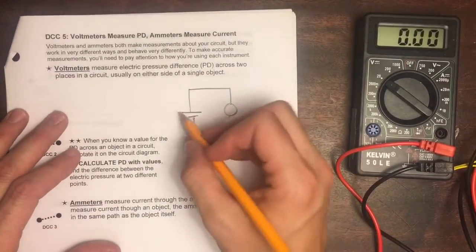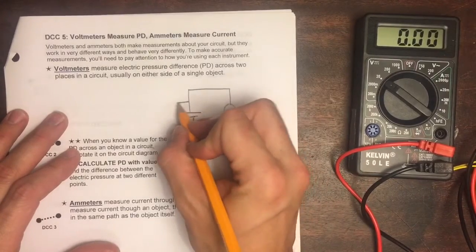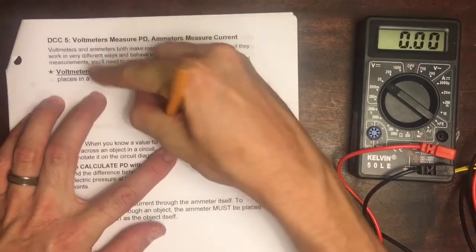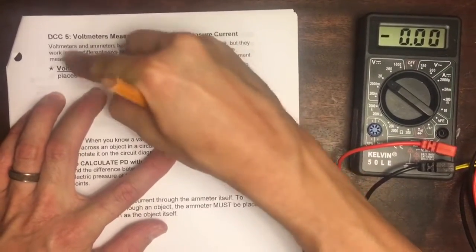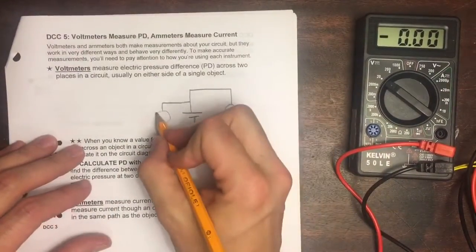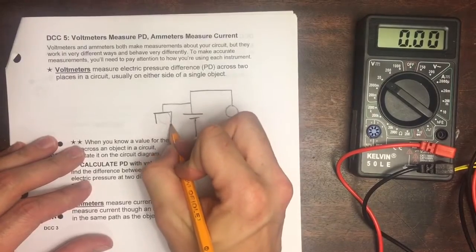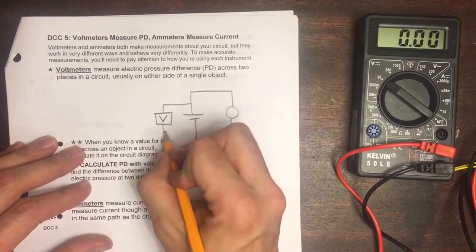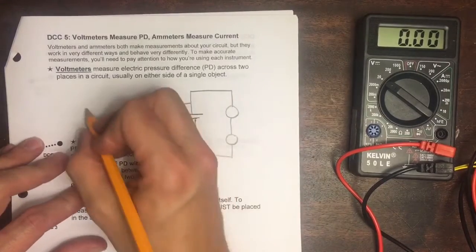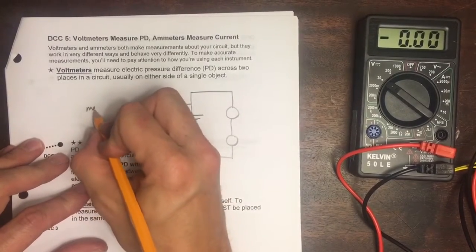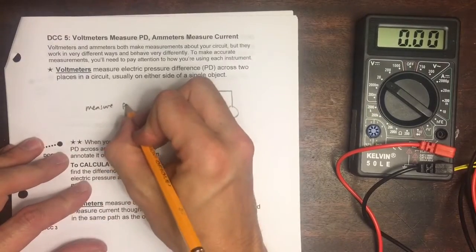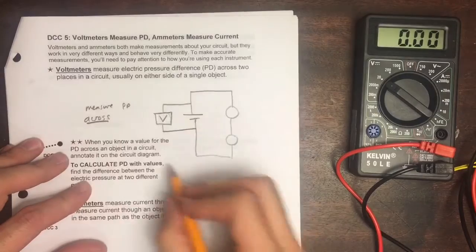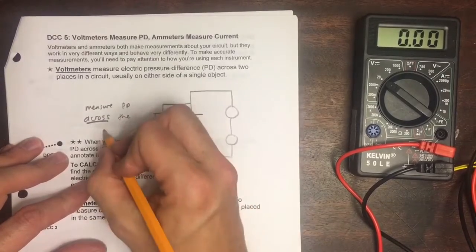Let's say this battery, we hook up a voltmeter across it. Voltmeters will be drawn with a box and a V inside the box. And notice we are measuring PD across the battery.